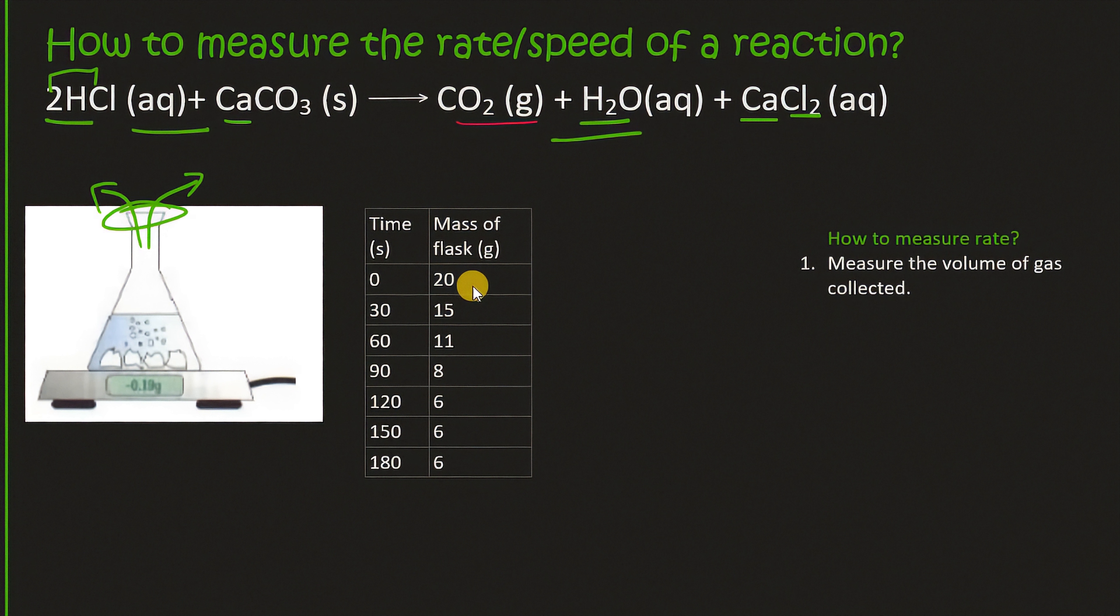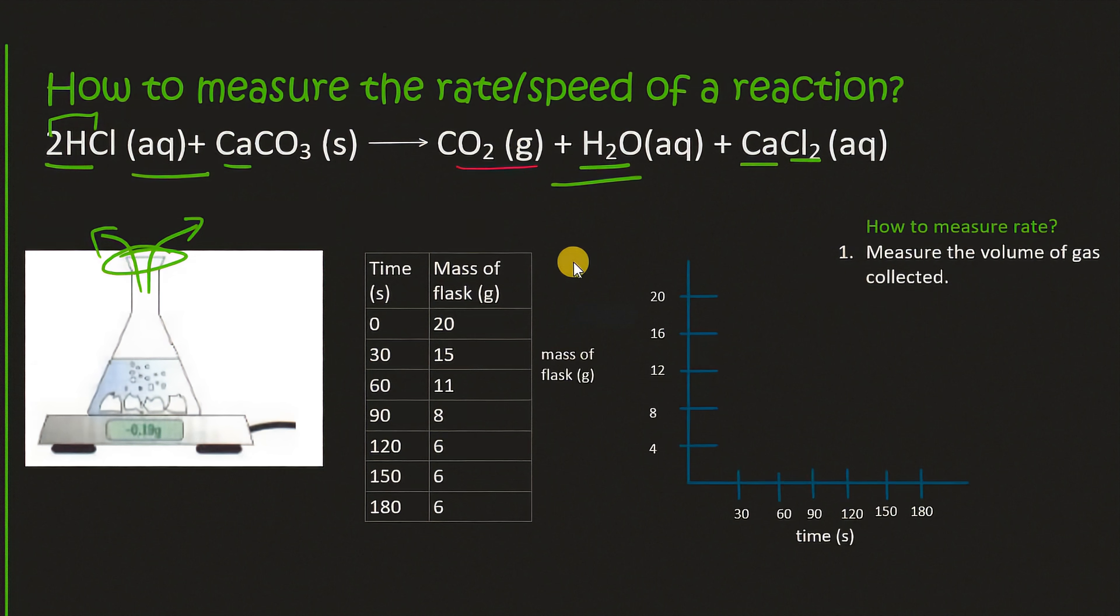And so now we can take these values in our table and construct a graph like this. And then once again we can use the values from the table and construct a graph. And so this graph goes downwards whereas the volume graph went upwards.